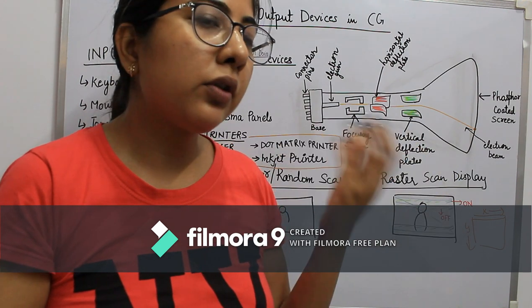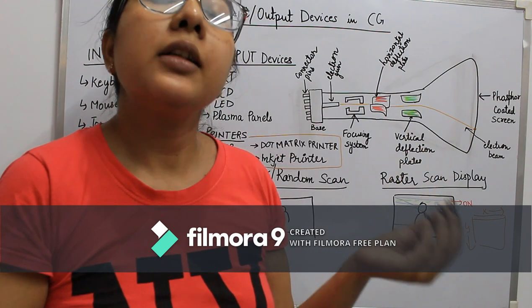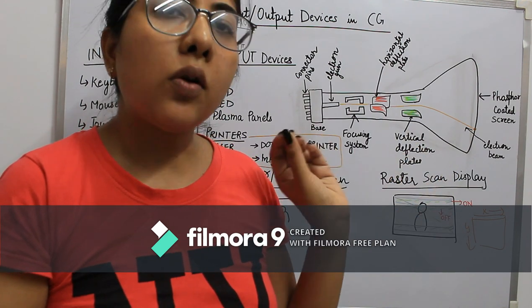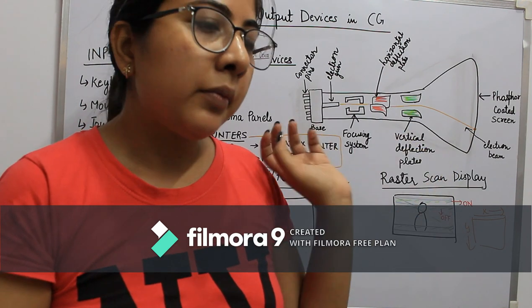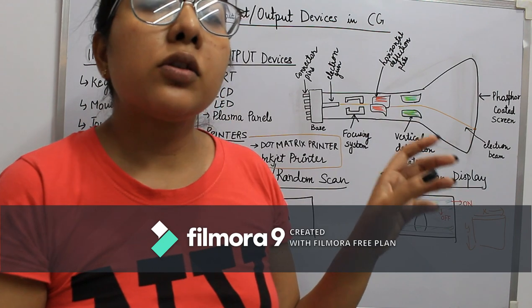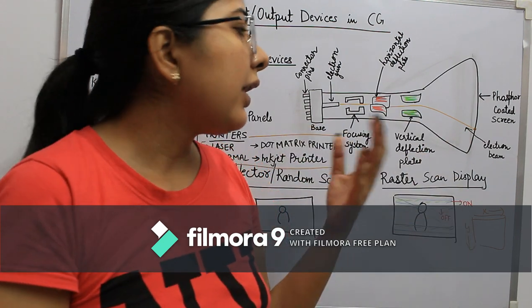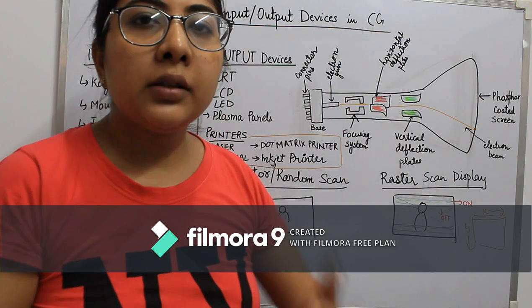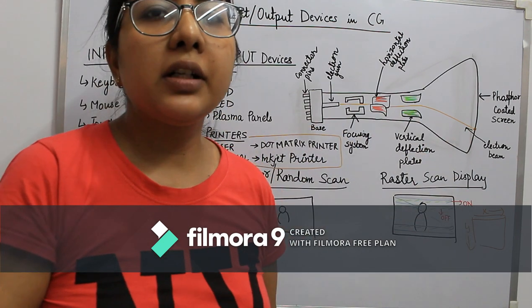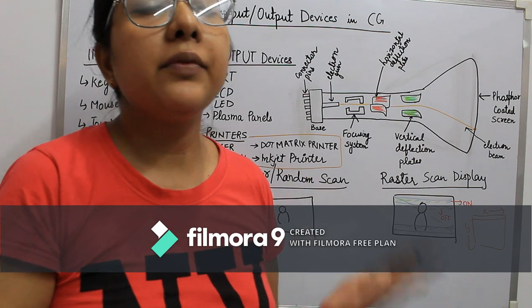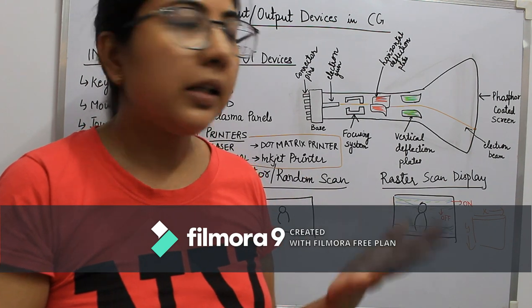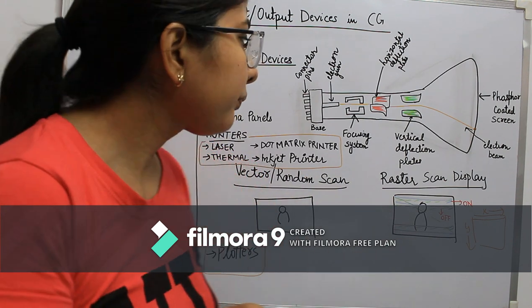A property of phosphorous is that when a cathode ray strikes a phosphorous screen, it will glow. Like in old TV monitors, you can see that when we turn off the TV, it is still glowing for a moment.